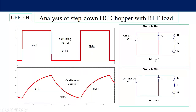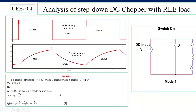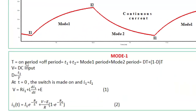In Mode 1 the inductor (load) current is increasing, and in Mode 2 the load current is decreasing — only continuous conduction mode is shown here. When the switch is on the diode is reverse-biased, and applying KVL gives: V = Ri₁ + L·(di₁/dt) + E. The total period T equals the on-period plus the off-period. The on-period equals DT (since D = T₁/T), and the off-period equals (1−D)T. At t = 0 the current is I₁ (initial value of Mode 1), and at t = T₁ it reaches I₂.